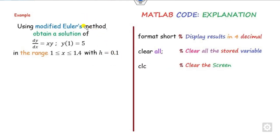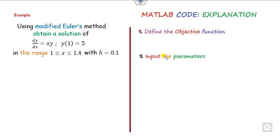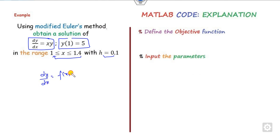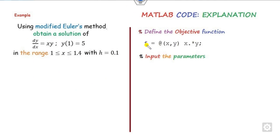Let us look at the MATLAB window. First of all, for any problem you have to write 'format short' if you want to display results up to four decimal places, clear all stored variables, and clear the screen. Once you are here, your first task is to define the function. Whatever function you have, you define it and compare it to make sure the coefficient is 1. For example, if your objective function is f(x,y) = x*y, you write this function depending on x and y.